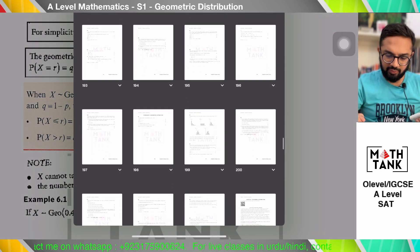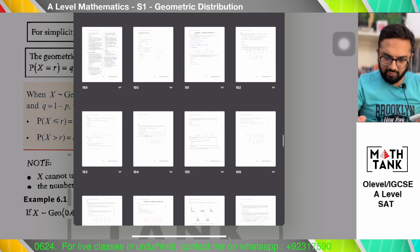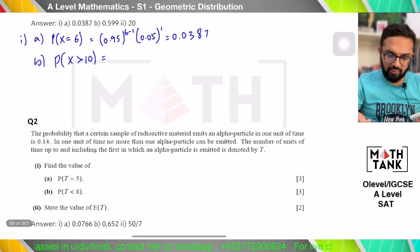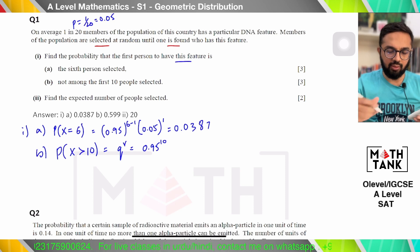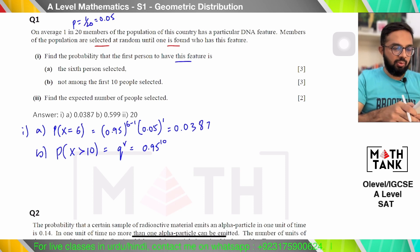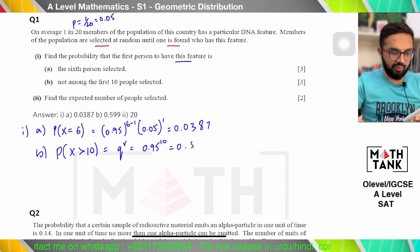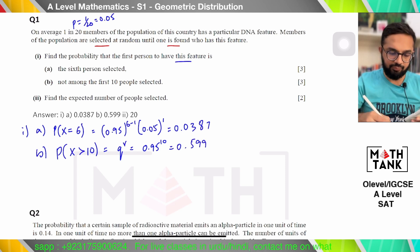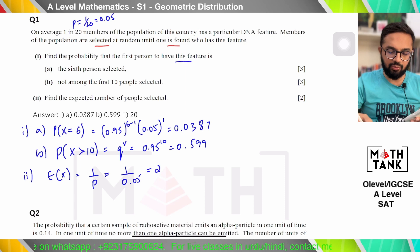So we have those formulas. Greater than 10 is q^r, which is 0.95^10. That gives me 0.599. To find the expected number of people, the expected value is just 1/p, so 1/0.05, which is 20.